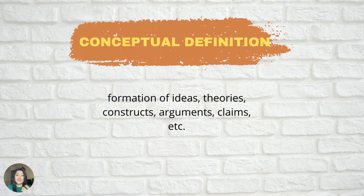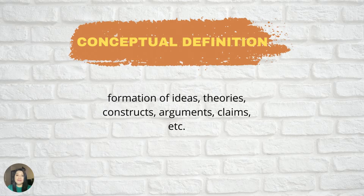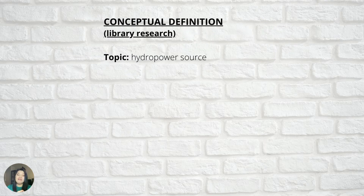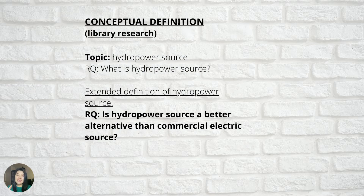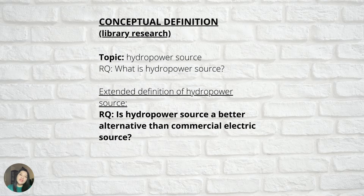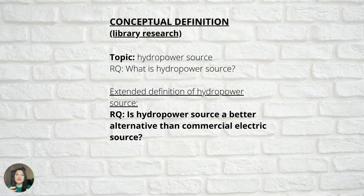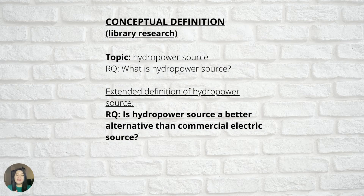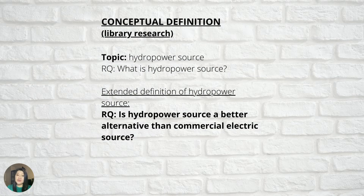A researcher can conceptualize a research topic by the following steps. First, you have to choose a topic — for example, hydropower source. Second, write a tentative research question — for example, 'What is hydropower source?' And for you to be able to extensively define your research topic, you can add more variables to your research question, for example, 'Is hydropower source a better alternative than commercial electric source?'